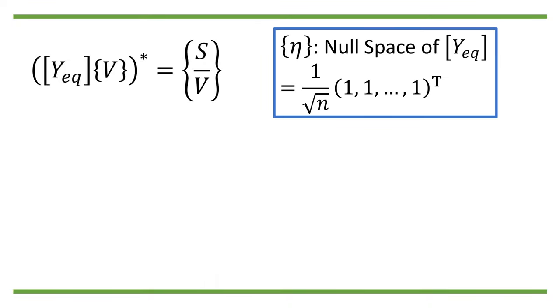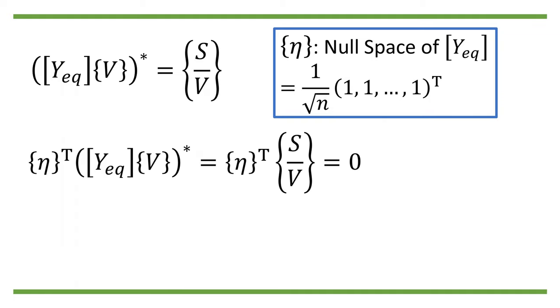let us denote the null space of y eq as eta, which happens to be a vector that has the same value of 1 over square root of n for every entries when normalized. Let us do the inner product between eta and y eq v conjugate. Since y eq is symmetric, eta is also the left null space of y eq. So we should have eta transpose dot y eq v conjugate equals eta transpose dot s divided by v equals 0.